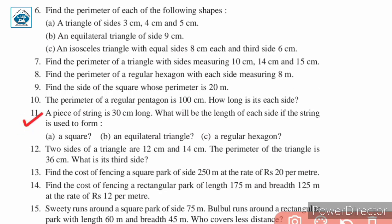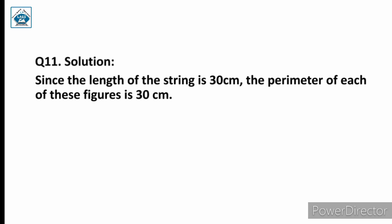Question number eleven: a piece of string is 30 centimeter long. What will be the length of each side if the string is used to form: a) a square, b) an equilateral triangle, c) a regular hexagon? We need to find the side length for each shape formed using the 30 centimeter string.